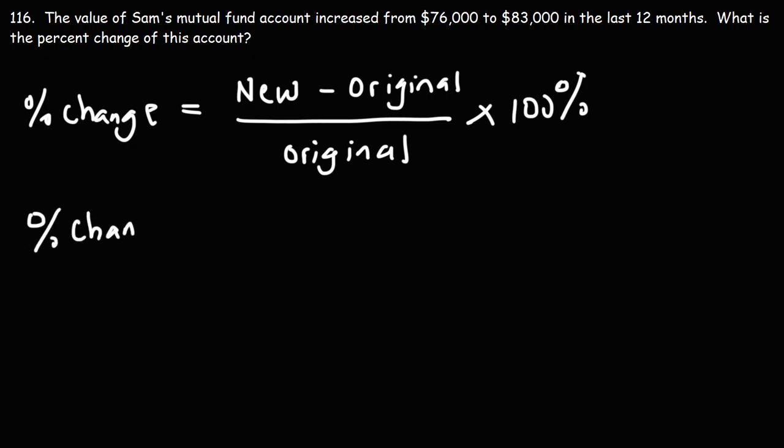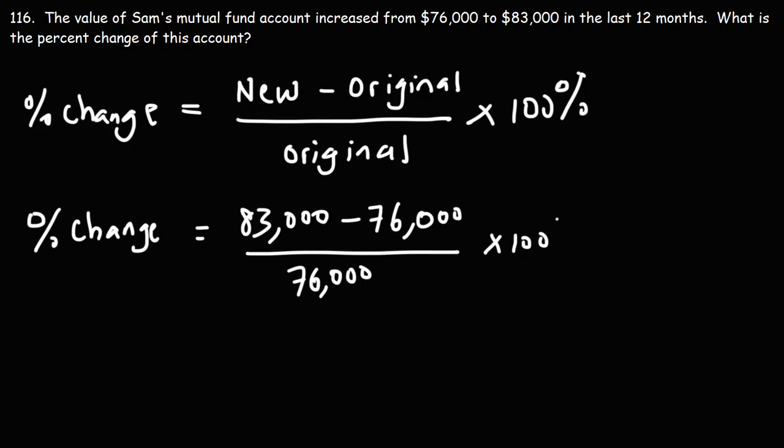So for this problem, the new value of his mutual fund account is $83,000. The original value was $76,000, and then we've got to multiply that by 100%.